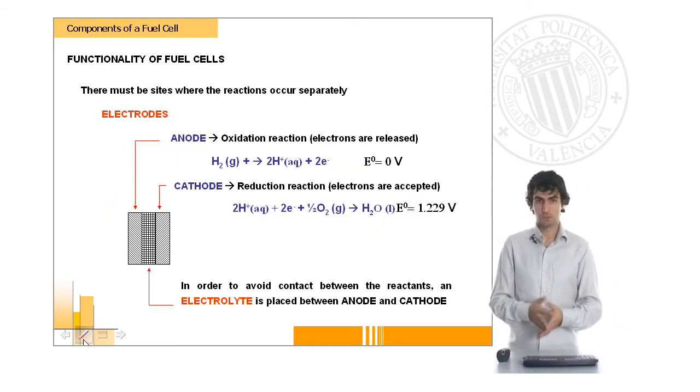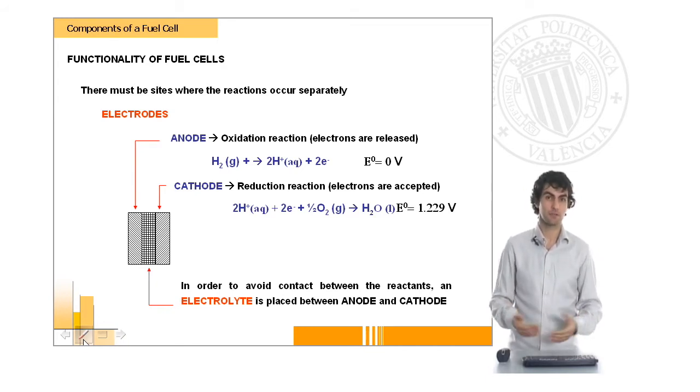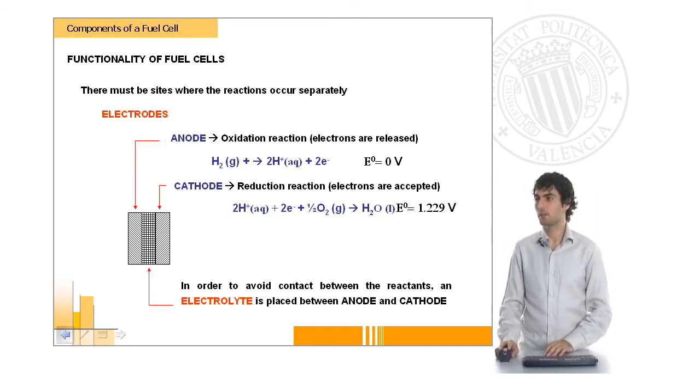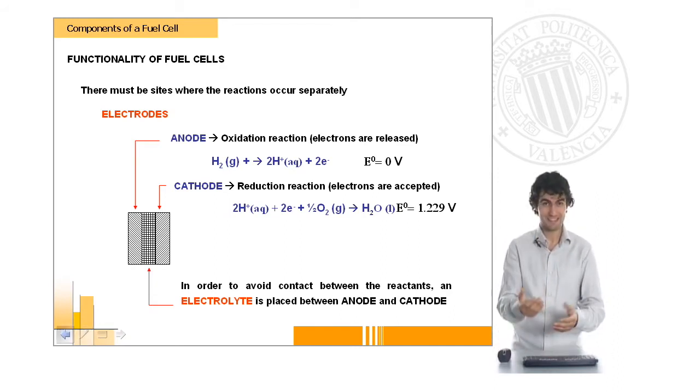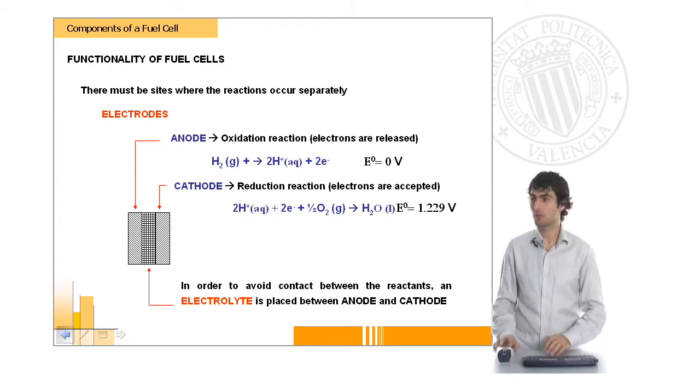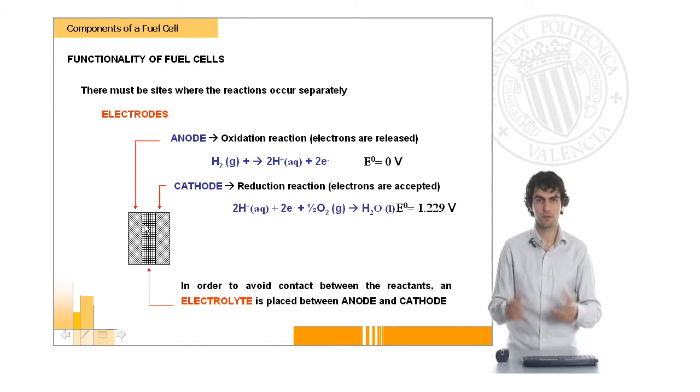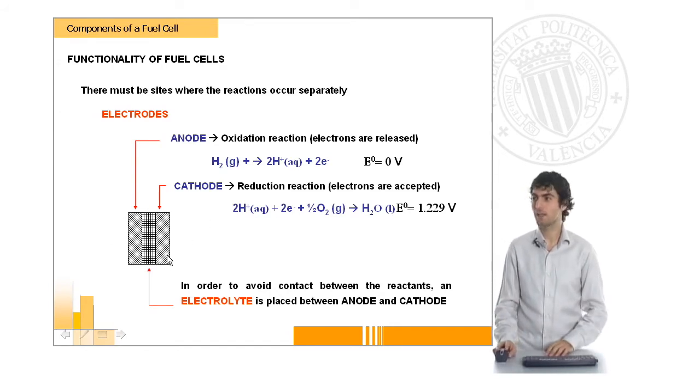The most important components of a fuel cell are those which are required for the electrochemical reactions to take place. And these are the electrodes which will basically host these reactions and an electrolyte which will be separating both electrodes, an anode and a cathode.